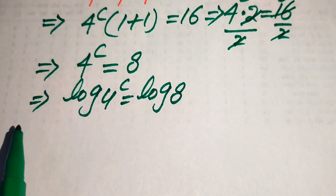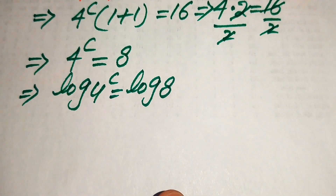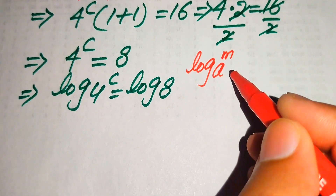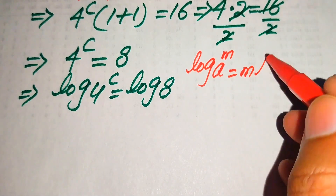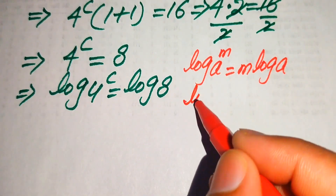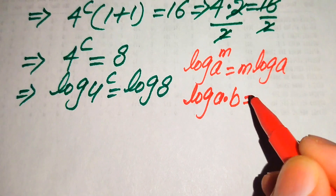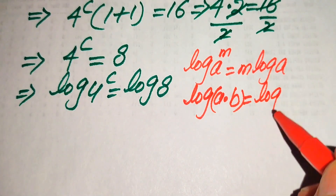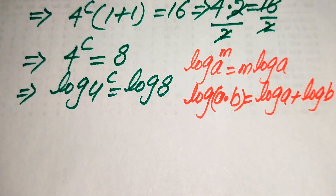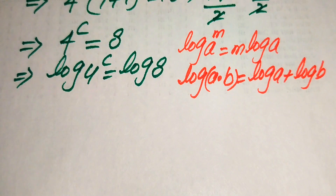Now we apply two nice properties of logarithms. On the left-hand side, we use the power rule: log of a to the power of m equals m times log a. On the right-hand side, we use the product rule: log of a multiplied by b equals log a plus log b. We need both of these properties to solve this problem.